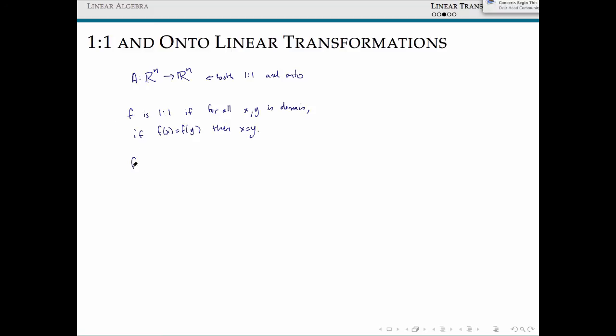We say that a function F is onto if for all z inside the codomain, which is the set that we're mapping onto, there exists some x such that f(x) equals that z.